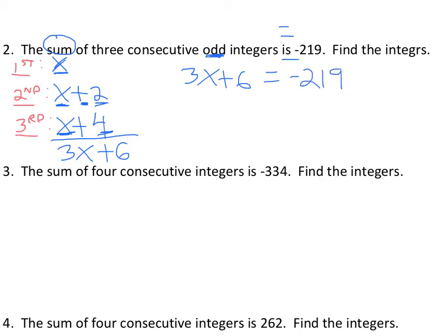And then we solve for it, right? We just have two steps. So we subtract 6 from both sides. So we're going to have 3x equals negative 219 minus 6 is negative 225.